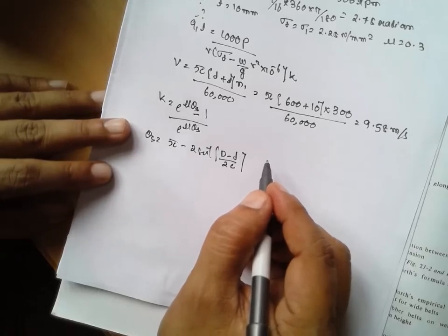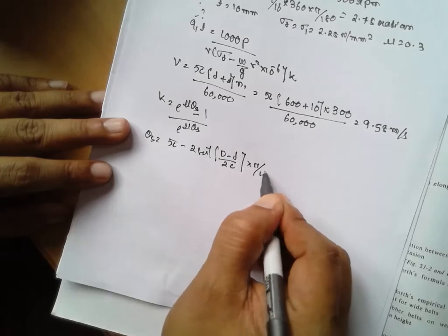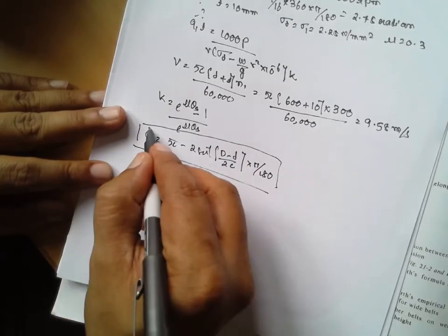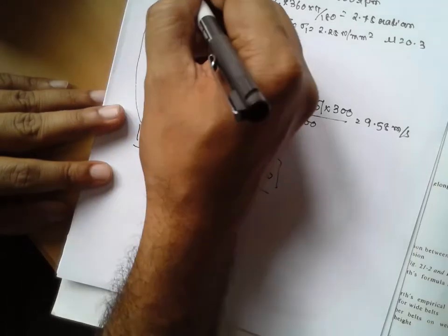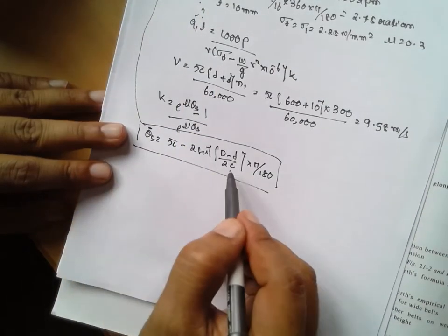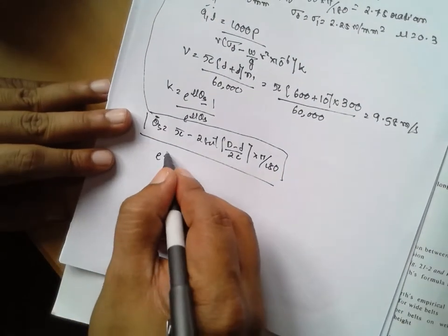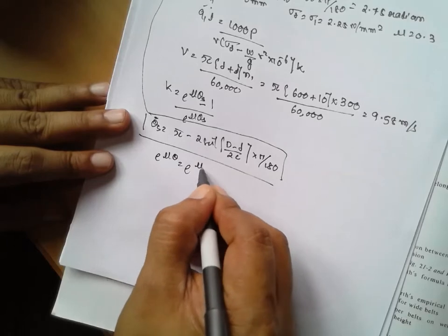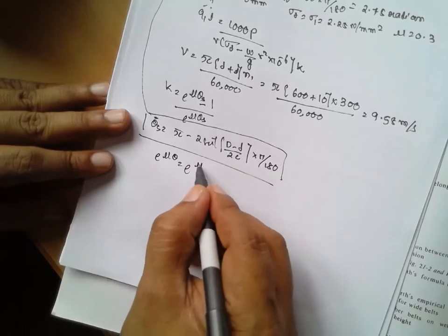Into 2c into pi by 180. But one thing, remember, already this theta s they are given it. Therefore no need to calculate this formula. Directly substitute this value. I will go for e raised to mu theta, that is e raised to mu, mu is 0.3 into 2.75.